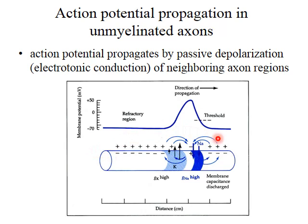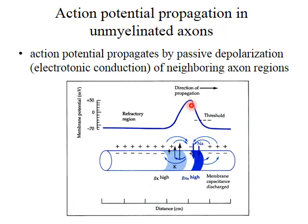The diagram here shows an unmyelinated axon. There will be a uniform distribution of voltage-gated sodium channels and potassium channels along the length of the axon. What is shown here is an action potential that has propagated down the axon and has arrived at this point. So at this region of the axon, the axon will be depolarized. This will have opened up sodium channels and there will be an influx of sodium into the cell, which has generated the action potential.